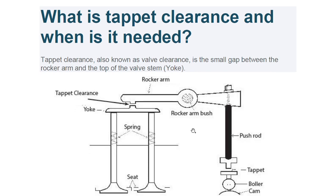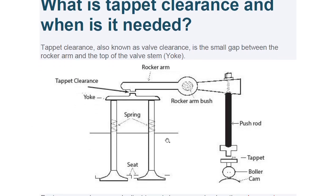When we talk about what is tappet clearance and when it is needed, this diagram will explain everything. You can see the rocker arm, the yoke of the valve, the valve seat, the valve, springs, spindles, rocker arm bush, the roller cam, the tappet, and the push rod. Tappet clearance, also known as valve clearance, and also known as valve lash.